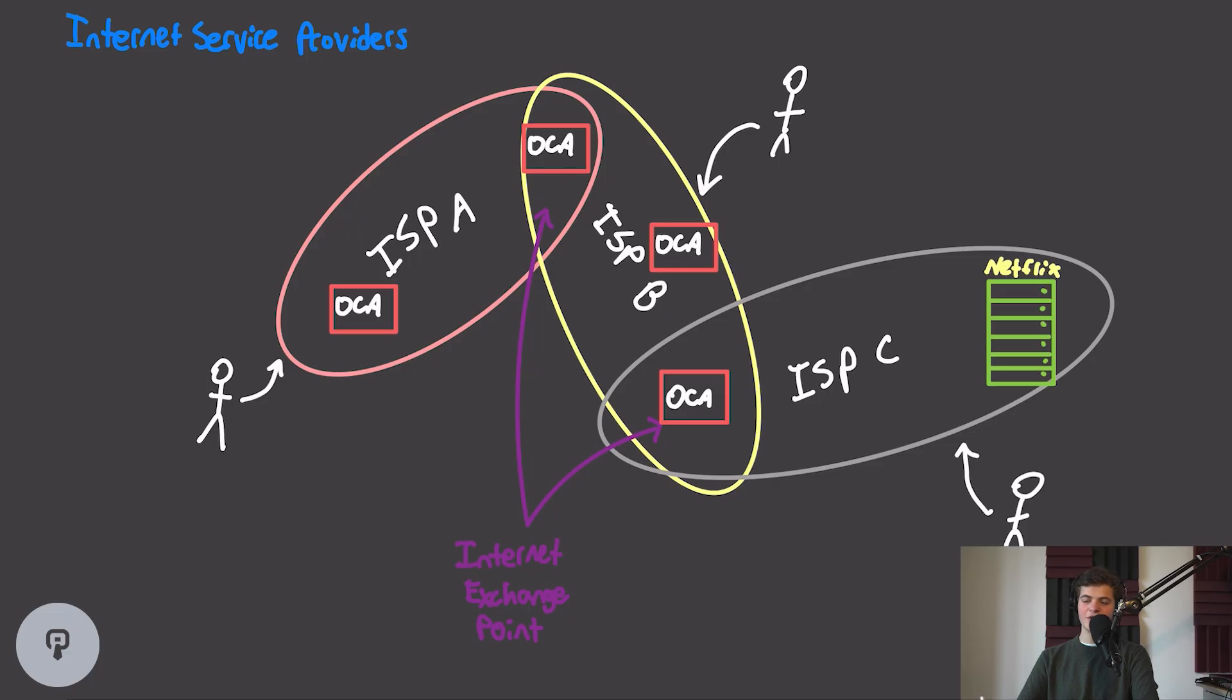By deploying these appliances, internet service providers can significantly reduce the bandwidth that's going across their network, and if they place these Open Connect appliances in strategic locations, they can really effectively optimize network traffic throughout their network, because Netflix traffic makes up such a significant part of the internet. So, in order to take advantage of this symbiotic relationship, Netflix is allowing internet service providers to deploy Open Connect appliances anywhere on their network to further optimize traffic.